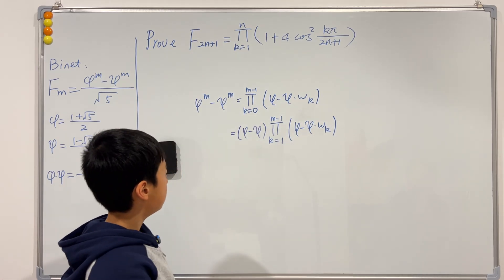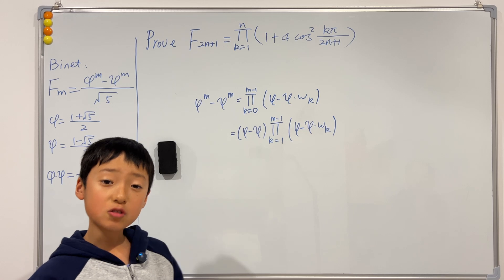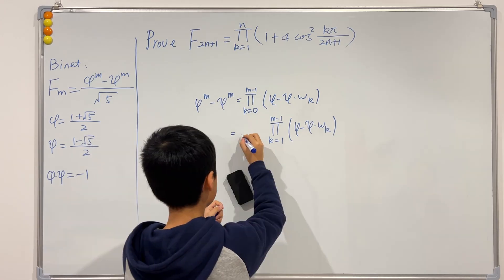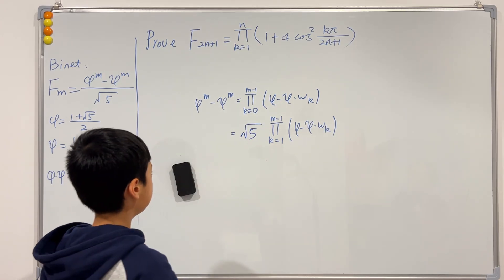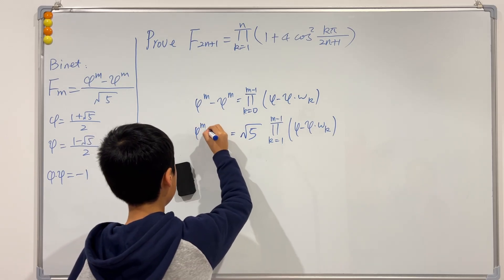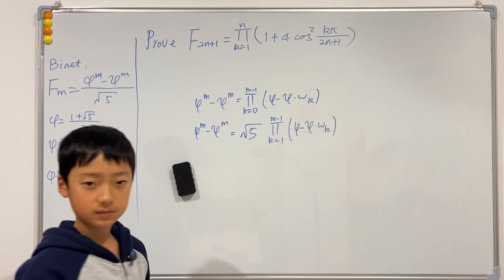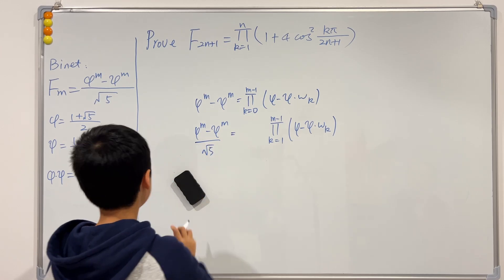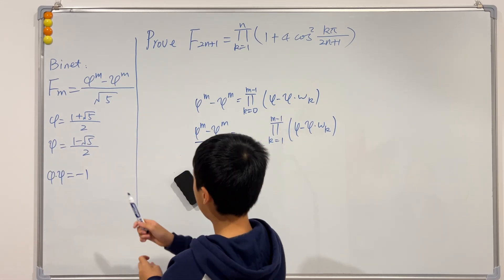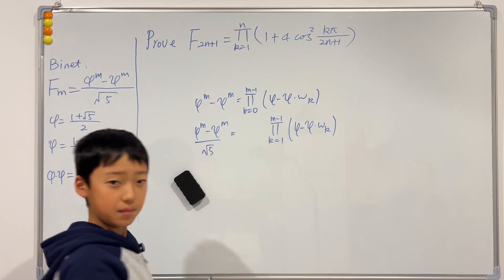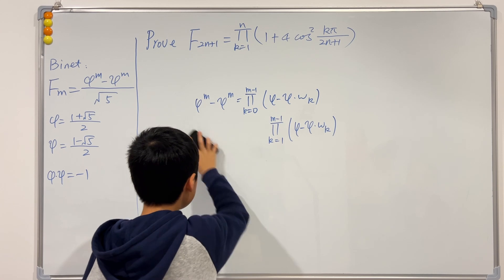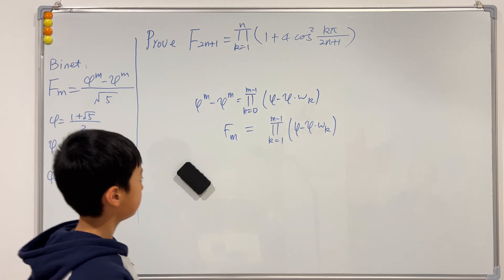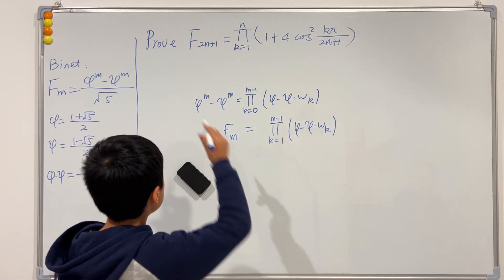Now, φ − c is actually just √5 — you can try that yourself. So φ^m − c^m equals √5 times that product. If we divide √5 to the left-hand side, Binet's theorem tells us this is just F(m), the m-th Fibonacci number. So the entire product expression simplifies beautifully to just F(m).